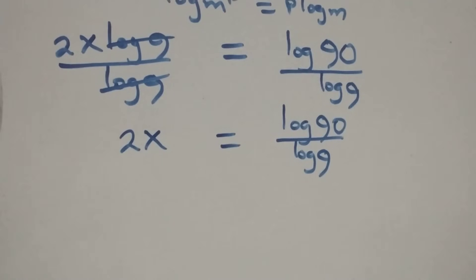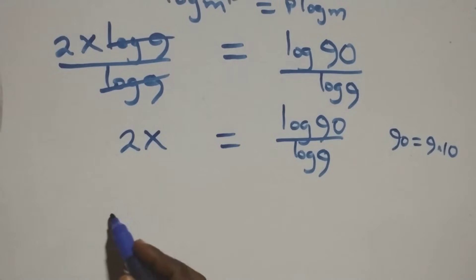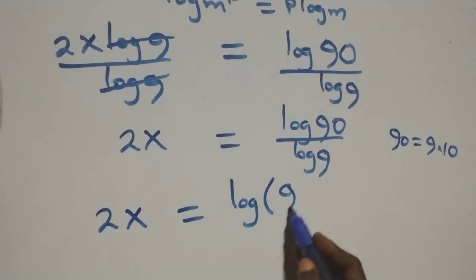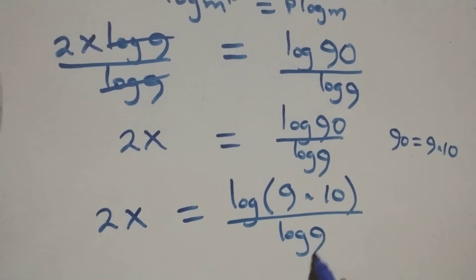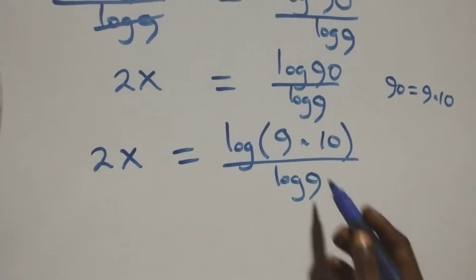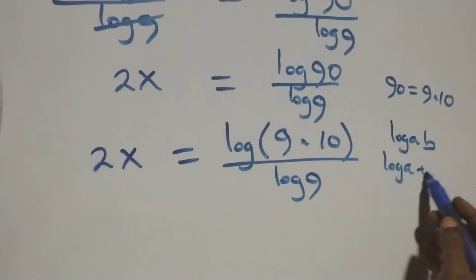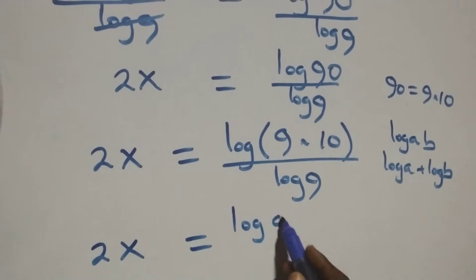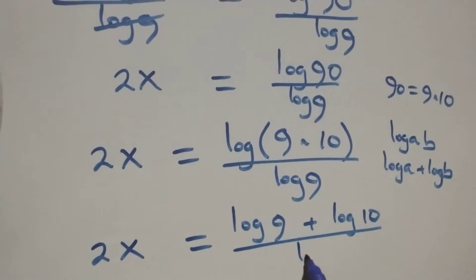Then, next step here, we can express 90 as 9 times 10. That is, what we have becomes 2x equals log of 9 times 10 over log 9. This follows from the law of logarithm: when we have log a times b, which is the same thing as log a plus log b. Then what we have here becomes 2x equals log 9 plus log 10 over log 9.